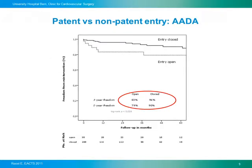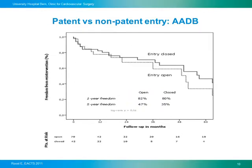Looking at the same question only in patients who underwent surgery for acute aortic dissection type A, the same holds true: a closed entry gives very good freedom from re-intervention compared to patients discharged with an open entry, and this is again significantly different. However, the same is not true for patients who had a primary type B aortic dissection — we could not find a significant influence of entry status on the need for re-intervention in that group.